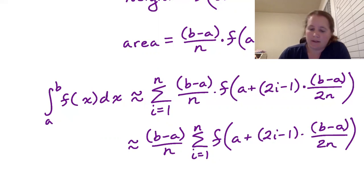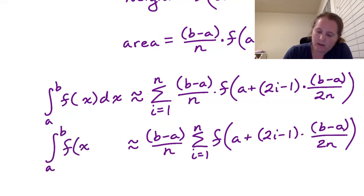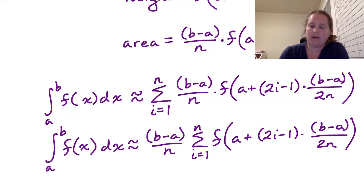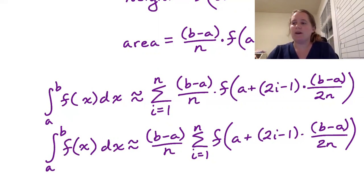So this is our formula using the midpoint rule for the definite integral from a to b of f of x dx. This gives us an approximation for that definite integral.